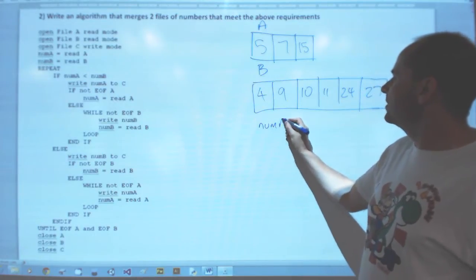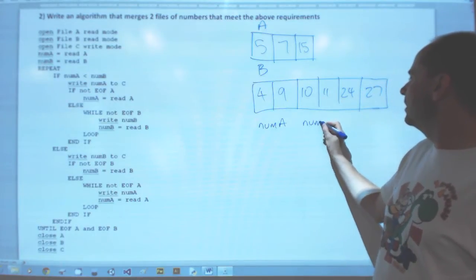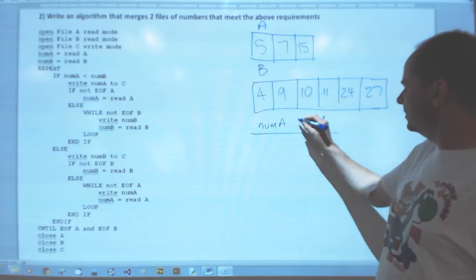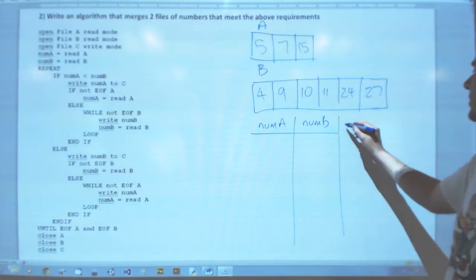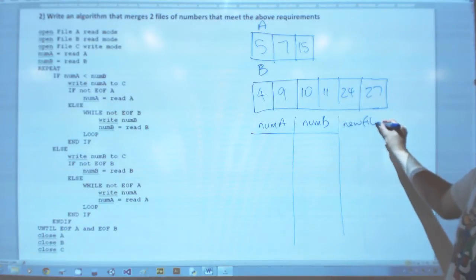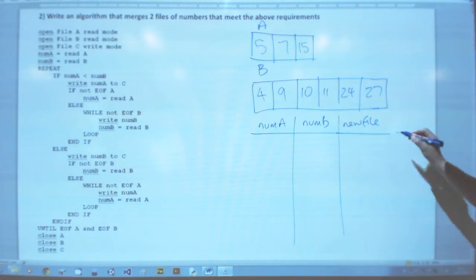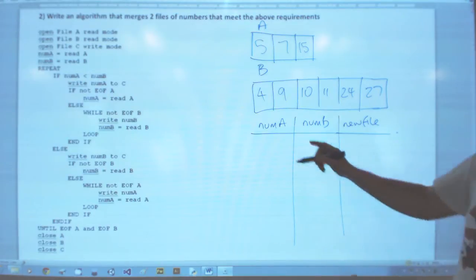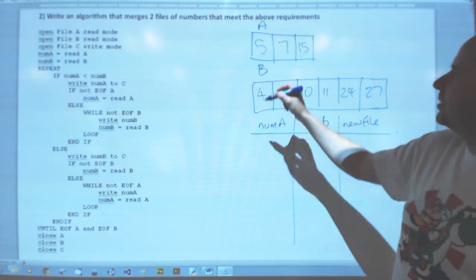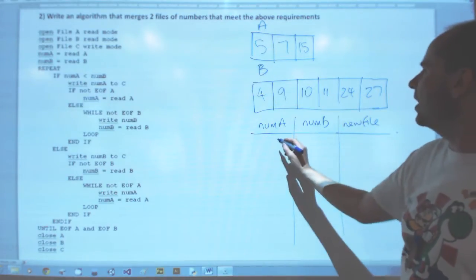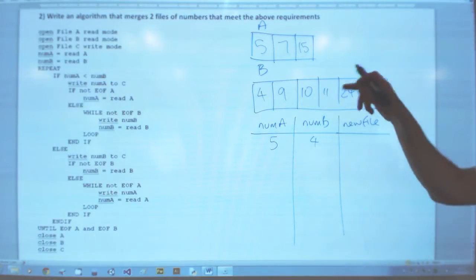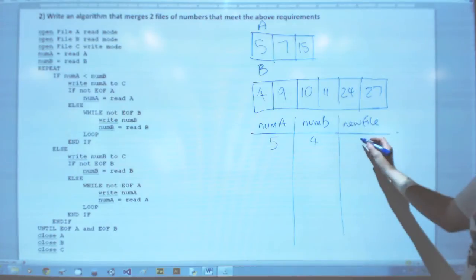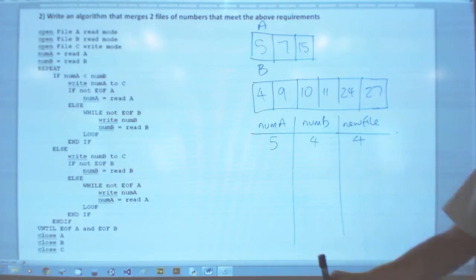So we're just gonna quickly run through this algorithm to see it working. We'll keep track of what number is in what and what we've written out - new file content in that column. So on the first bit there, after we open the files we're reading from A and B. A is five and number B is four. We do a comparison: which is smaller? Four is obviously smaller, so that gets written out.